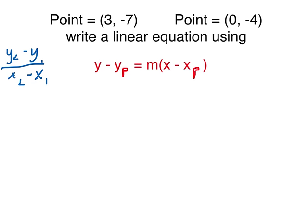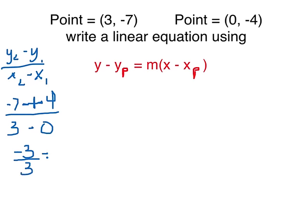So here are the y coordinates. The y coordinates are negative 7 and negative 4. So it's going to be negative 7, and the formula says to do minus, but the 4 has its own negative. Then x is 3 minus 0. The double negative turns into a positive. Since the 7 is negative and the 4 is positive, these are different signs, so I'm going to subtract: 7 minus 4 is 3, and I keep the sign of the bigger number, which is 7, so it's negative. All over 3 minus 0 is 3. This simplifies to negative 1. So my slope m is negative 1.